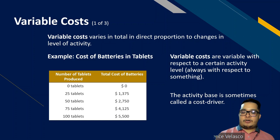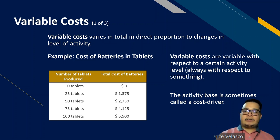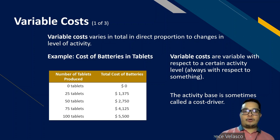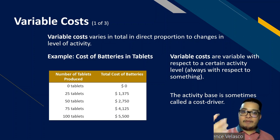Variable costs: based on the nomenclature itself, it's very clear what variable costs are. If we define it, variable cost varies in total in direct proportion to changes in the level of activity. One key item in that definition is the concept of level of activity. For example, if you own a fishbowl stand, the cost of the fishbowls is variable — it depends on the level of output.